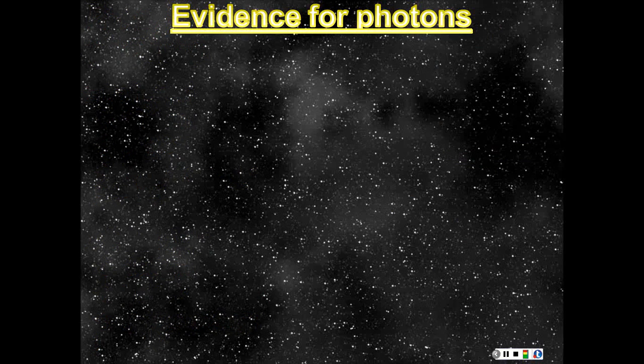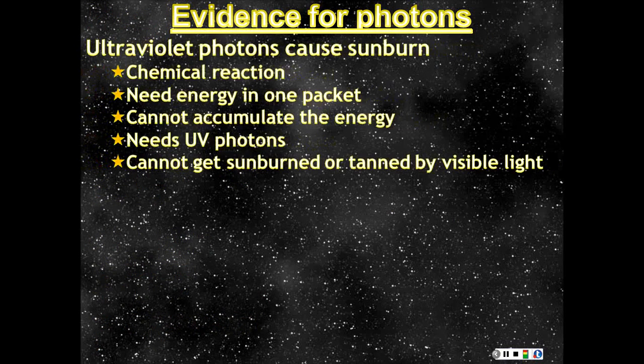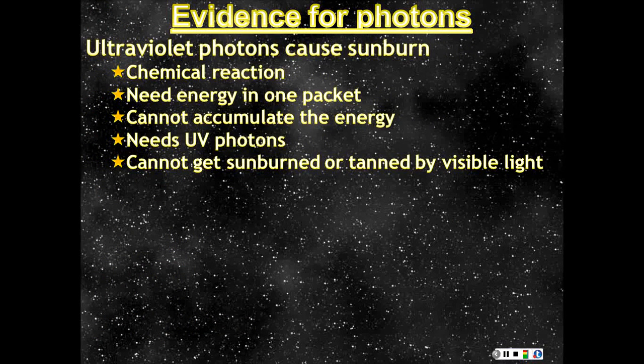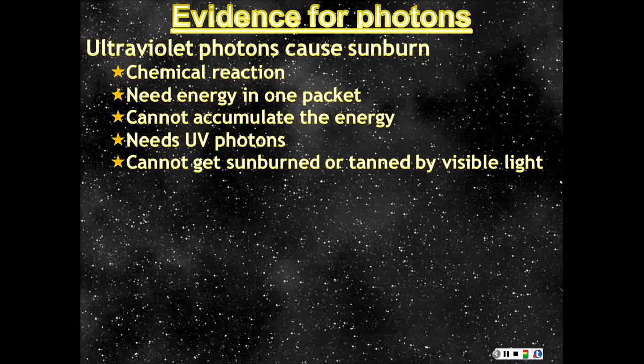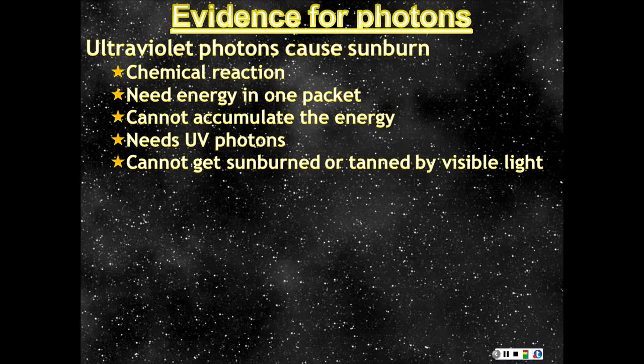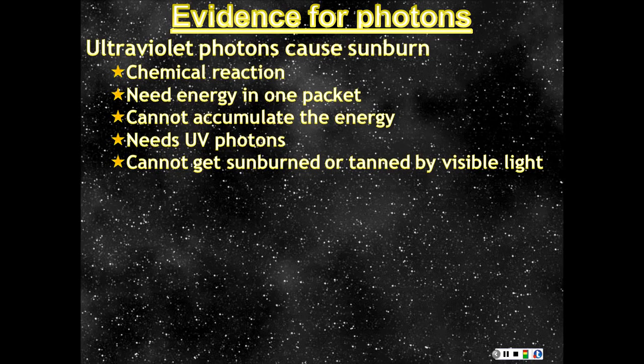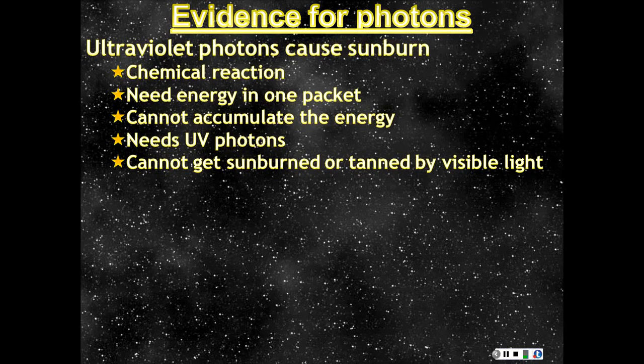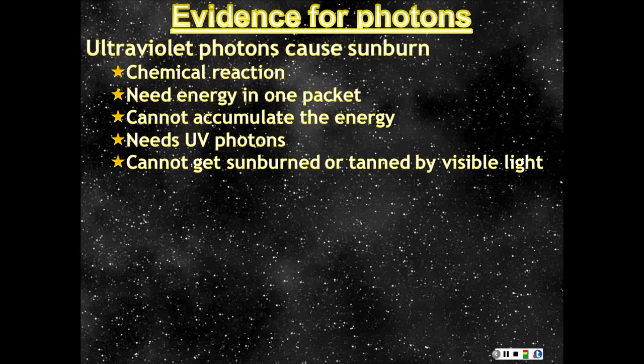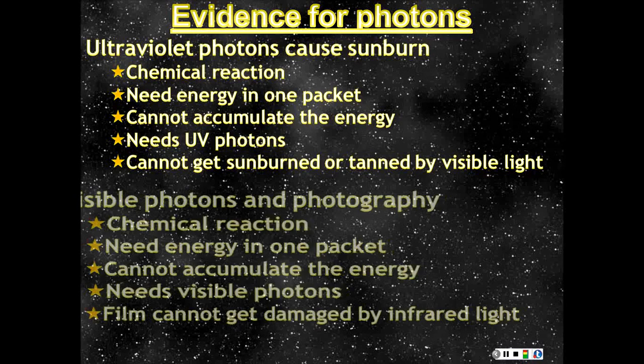What is the evidence that we have light as photons? Things like sunburn. You don't get sunburns sat in a room where you have lights. The lights are not giving off ultraviolet. That means that in order to cause the chemical reaction that gives rise to the sunburn, or a tan, you must have a threshold energy. You have to be above a certain energy in the packet. You must have one packet of energy that's big enough, and you can't just accumulate energy. You need to have UV photons. You can sit for as long as you like in a room with lights on and never get burned, but you can sit out in the sun for a very short time, especially with my skin, and end up bright red. That is one of the pieces of evidence.